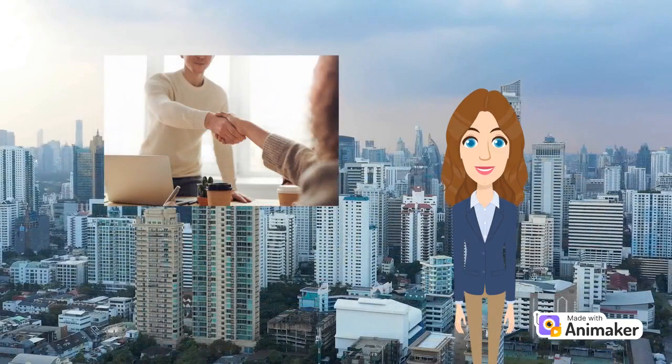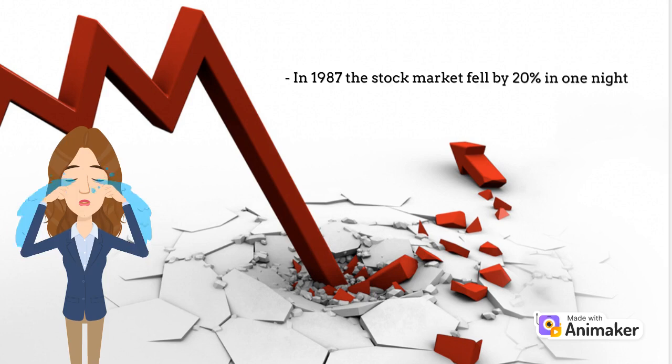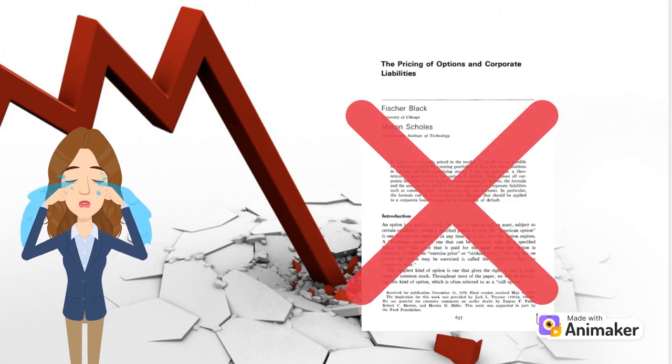In 1987, the stock market fell by 20% in one night. This was the first indication that the Black-Scholes model was not the whole story, and afterwards, more discrepancies started to appear. Mandelbrot's corrected model offered a solution to this, and many physicists worked on correcting the model.